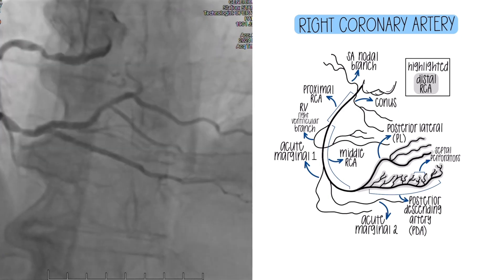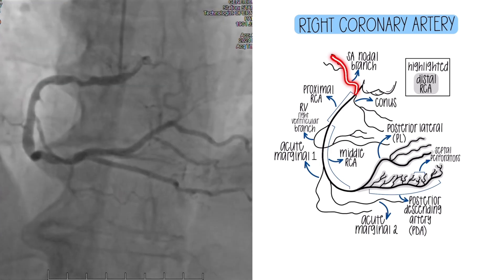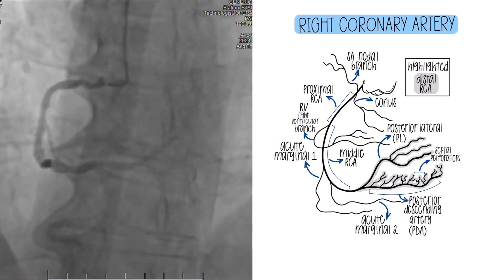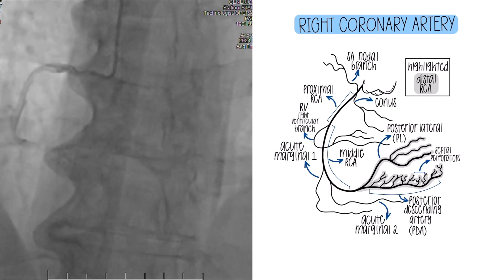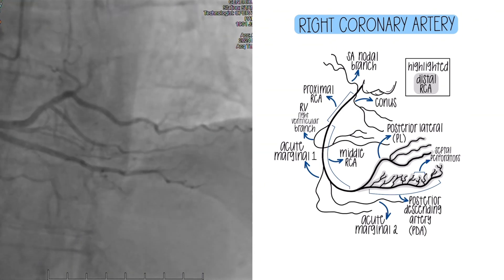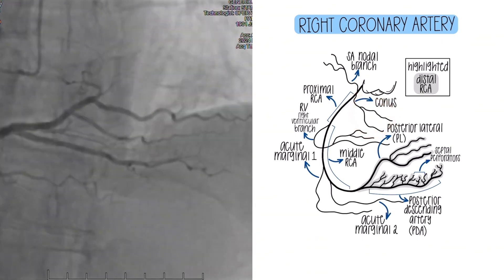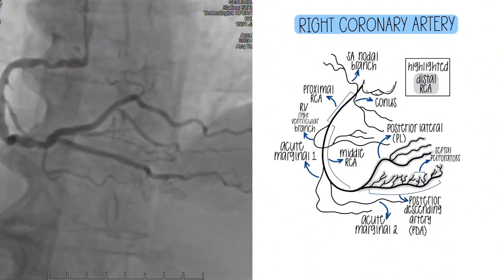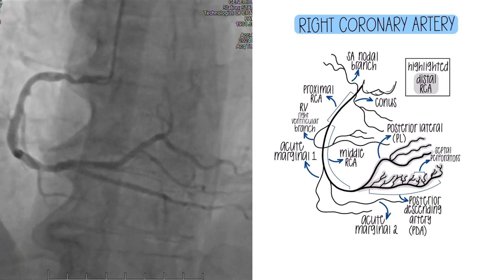Now let's talk about the smaller branches that come off of it. The first two are probably where you'll hear the most variation depending on what you're reading and who you're working with, so I'll give you both reasonings — neither are really wrong. Some will say the first branch that comes off the RCA is the conus, which I have labeled here, though it is actually the second branch in my image. Does it really make a huge deal? No — what you're mostly looking at is directionality.